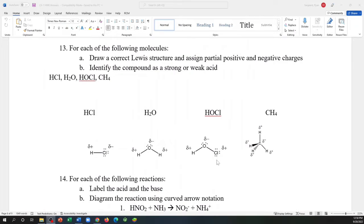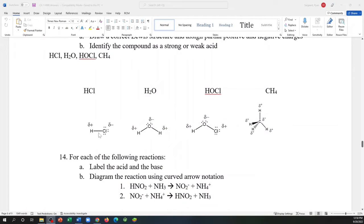So here I have the four compounds with their corresponding Lewis structures. I recognize that they're very small. Partial positives are always assigned to the least electronegative element in the bond, and the partial negative is the more electronegative element in the bond.